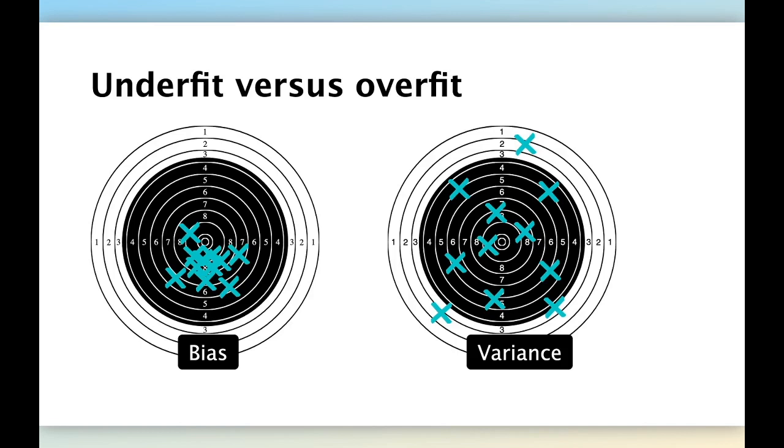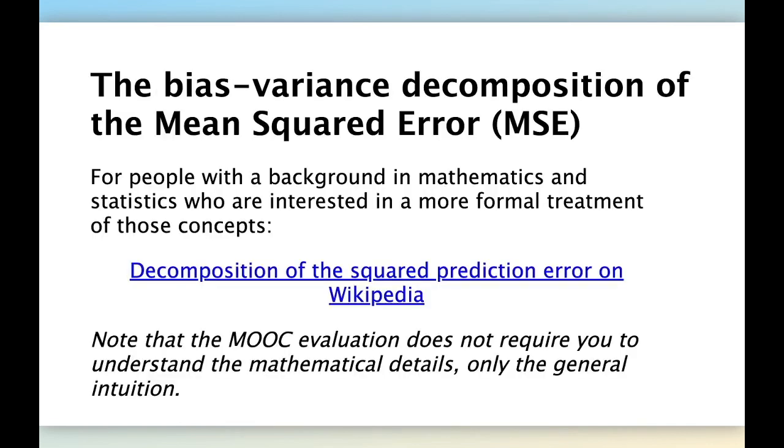So it's again the same fundamental trade-off of machine learning. This can be formalized from a mathematical point of view with exact quantity. And we can actually decompose what we call the mean squared error of a regression model by taking the sum of a squared bias plus the variance plus irreducible errors. But I don't want to go into detail for this MOOC. If you have a background in mathematics or are interested in learning more, you can have a look at the Wikipedia article on the decomposition of the mean squared error.